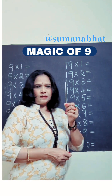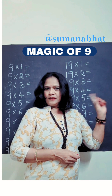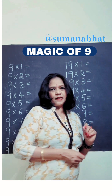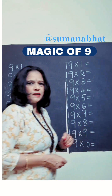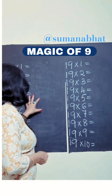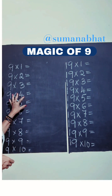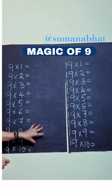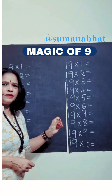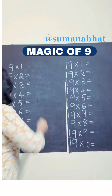First we are going to write the multiplication tables of 9, and then we are going to write the tables of 19. First we will write the tables of 9. The pattern is already written — we are just writing the answer. See how easily we can write the answer for this.